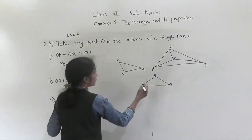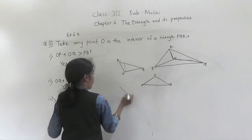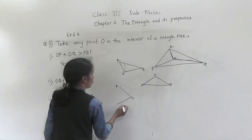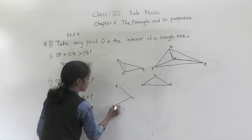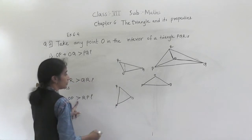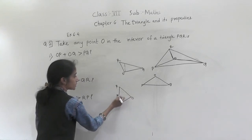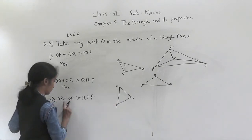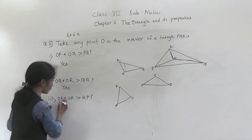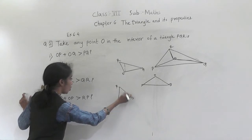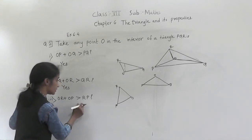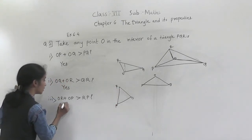Next: OR plus OP is greater than RP. The sum of the two sides of triangle ORP — OR plus OP — is greater than the third side RP. So it is proved that OR plus OP is greater than RP.